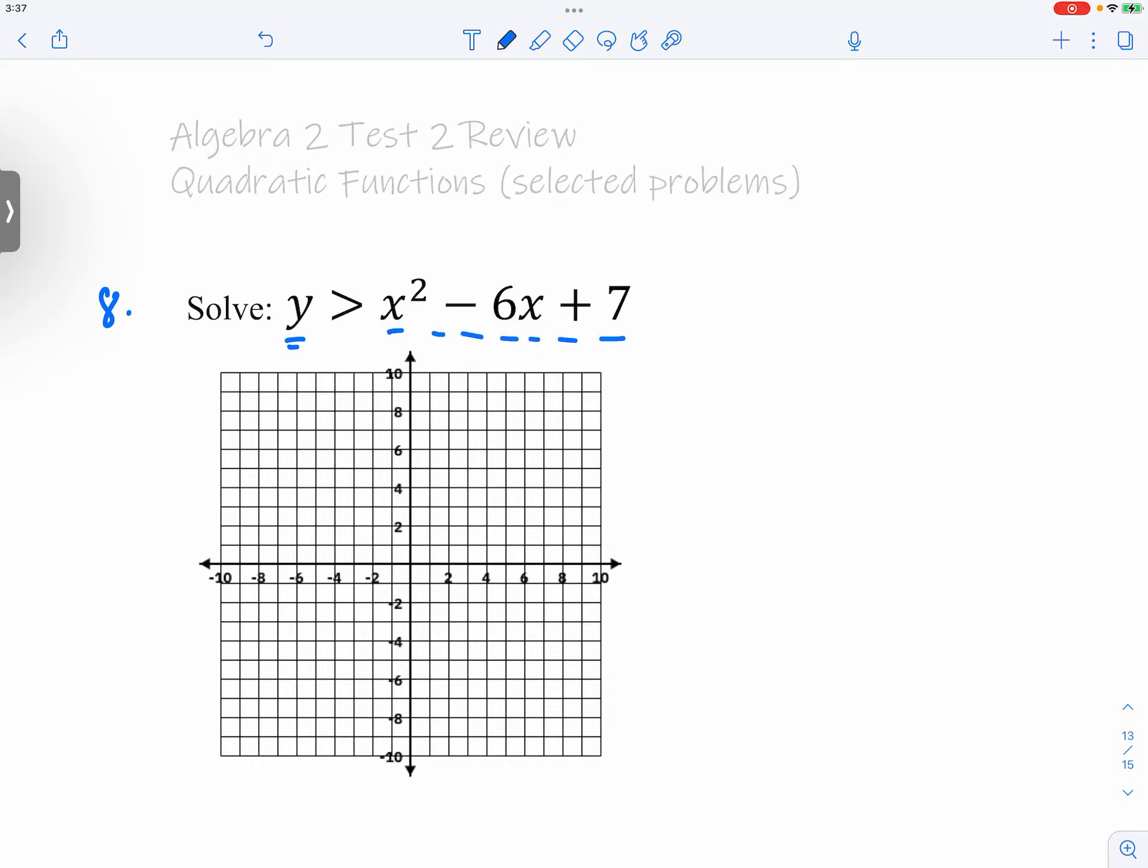But first, what do we know about this line? Well, I know there's a y-intercept of 7. I want to try to factor, only to find out that it's actually not factorable.